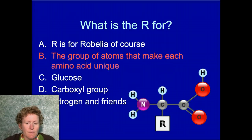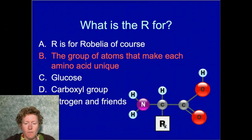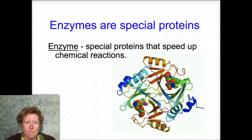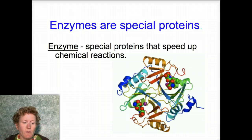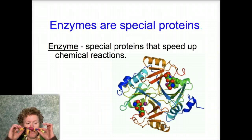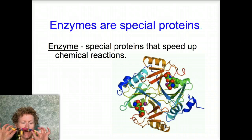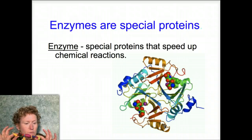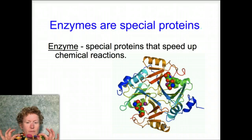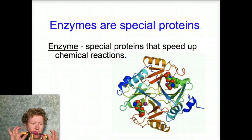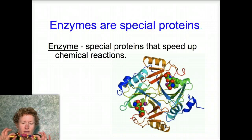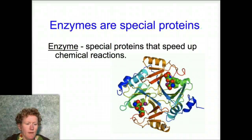The R group is a set of atoms that makes each amino acid unique. Enzymes are a special group of proteins — you put lots of different amino acids together, and some of those proteins end up being enzymes, depending on the shape of the protein and the length of the chain.